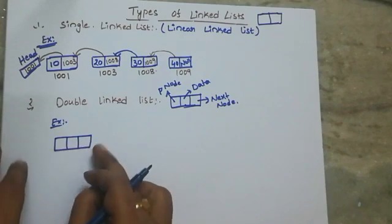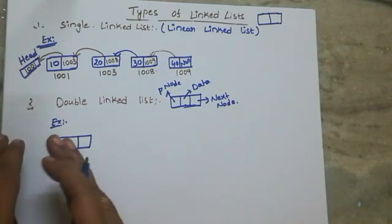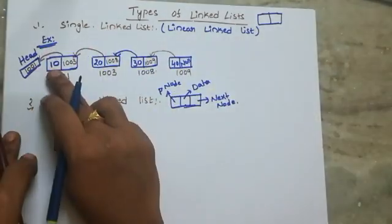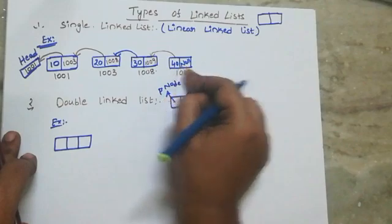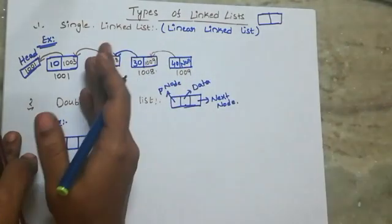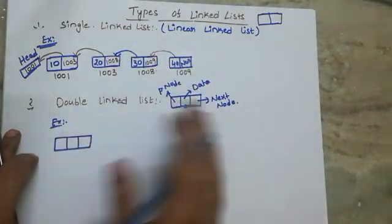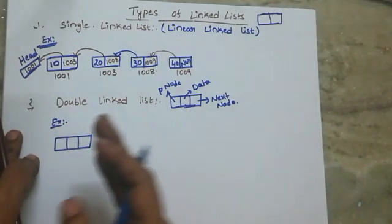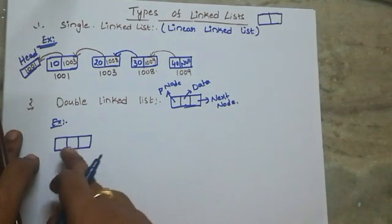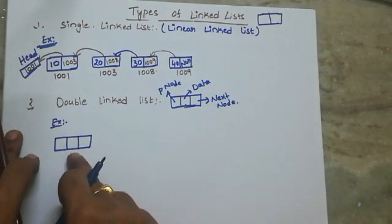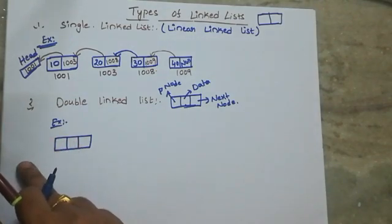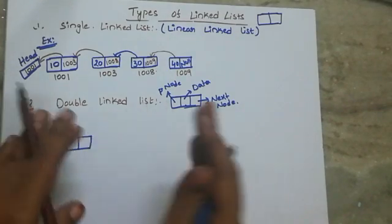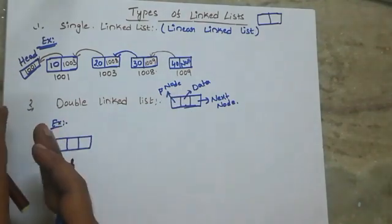More than one link — that is, a previous link and a next node link. In single linked list, only forward direction: 10 to 20, 20 to 30, 30 to 40 and so on. But in double linked list, we can also perform a backward step. We can traverse the forward direction and the backward direction.